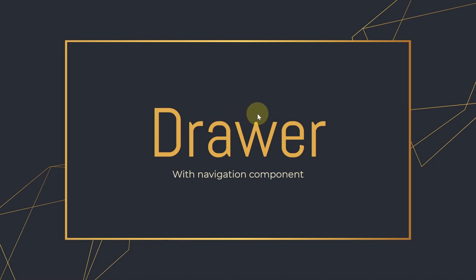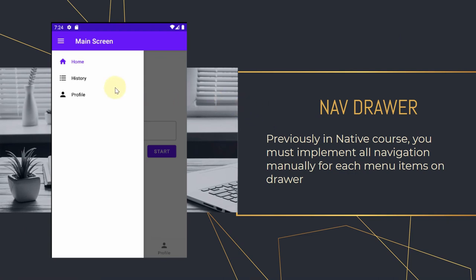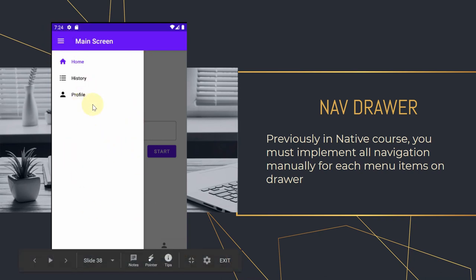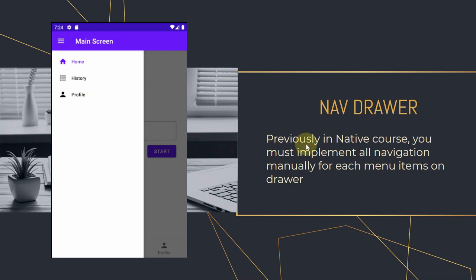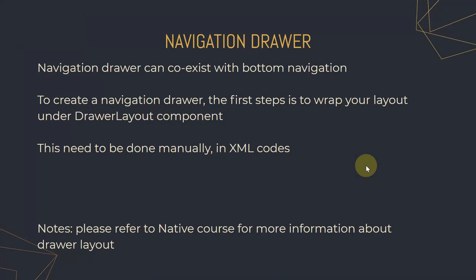Now for the final tutorial: the navigation drawer with the navigation component. The drawer is a collection of menus hidden on the left side of the screen. You click the hamburger menu icon to reveal and interact with the hidden menu. In the native course you had to implement all navigation manually for each individual menu item. Now let's see how to use the navigation component to handle this.